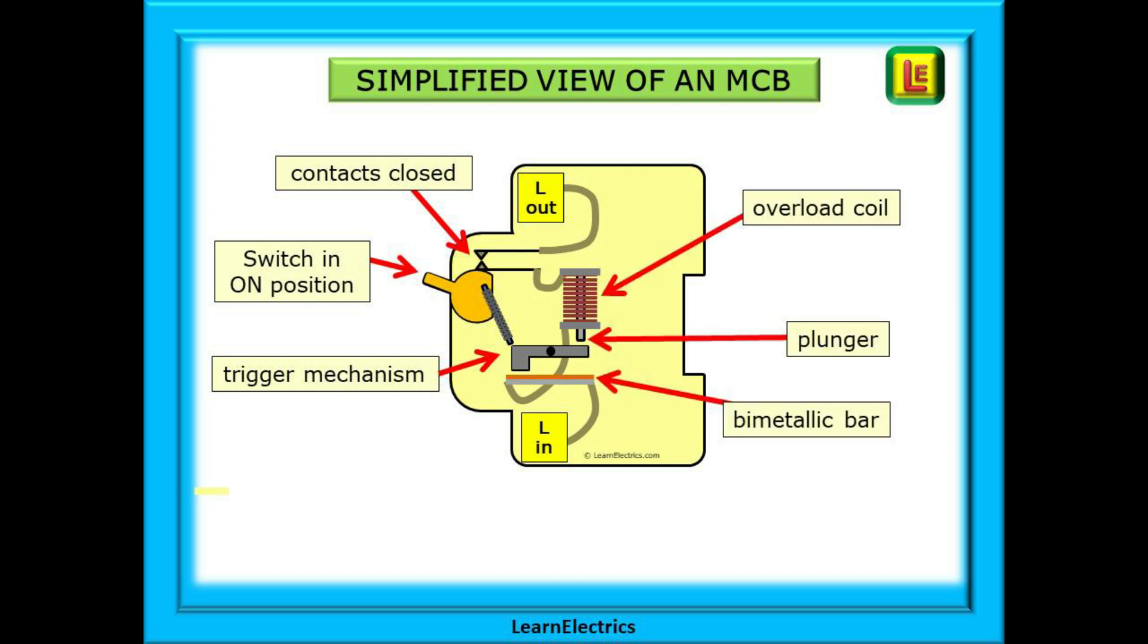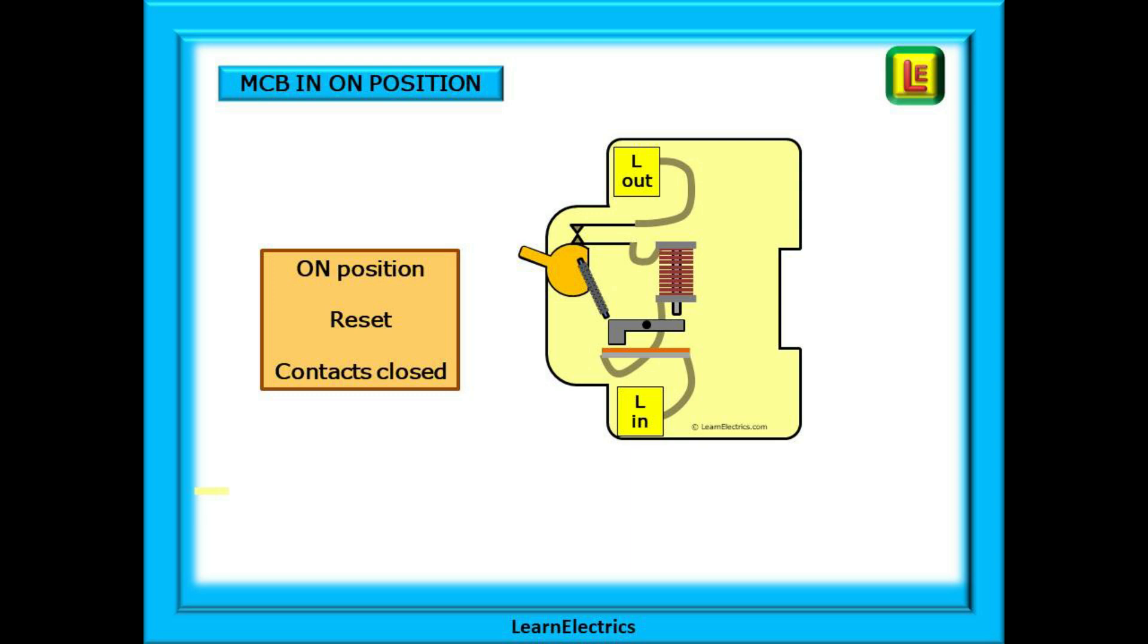We have an overload coil or solenoid along with its plunger for rapidly changing currents and we have the bimetallic strip or bar for the small and long duration overload currents. This simple drawing shows the MCB in the on position, the rest position with the contacts closed. Current can flow through the device.